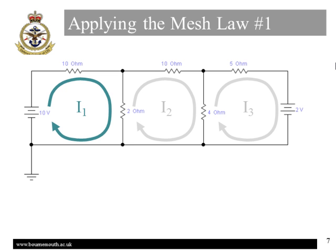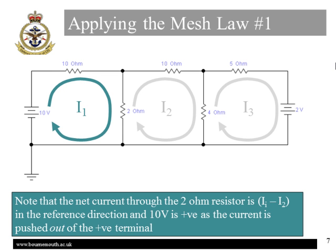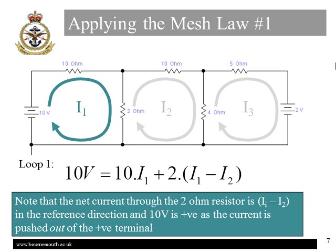This is the result of the mesh law applied to loop 1. The sum of the voltage sources equals the sum of the voltage drops gives us plus 10 volts for the source as the current is emerging from its positive terminal. There is then an IR drop of I1 amps times 10 Ohms across a 10 Ohm resistor. However, using our circulating current as a reference, notice that the current flowing down through the 2 Ohm resistor in the reference direction is I1 minus I2 amps, and so we have a drop of 2 Ohms times I1 minus I2 for this resistor.